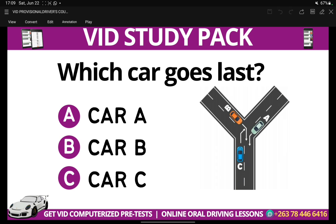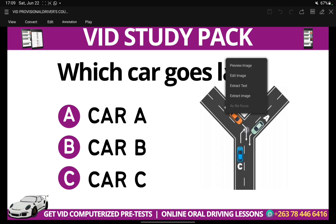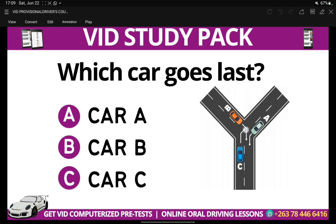Car A has to give right of way to Car B because they are both about to enter into the same lane. Car B should give the right of way to Car C because if they don't, both cars can collide at this point. This road rule only works if one car has to give right of way to another car and if it doesn't, there will be a collision. If Car A doesn't give right of way to Car B, there will be a collision because they want to use the same lane.